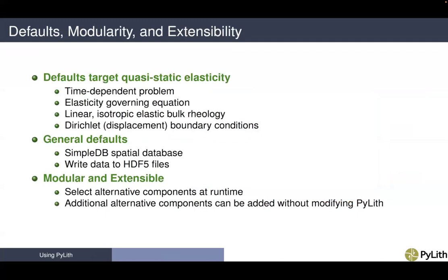Some additional words about how we set up simulations. The default values target quasi-static elasticity — the default problem type is a time-dependent problem that solves the elasticity equation with a linear isotropic elastic bulk rheology using Dirichlet boundary conditions. The general default for specifying boundary conditions is to use a SimpleDB spatial database — a text file with arbitrarily distributed points. For a structured grid, you want to use the SimpleGridDB which is much more efficient. Output by default is written to HDF5 files, and you can select alternative components at runtime.